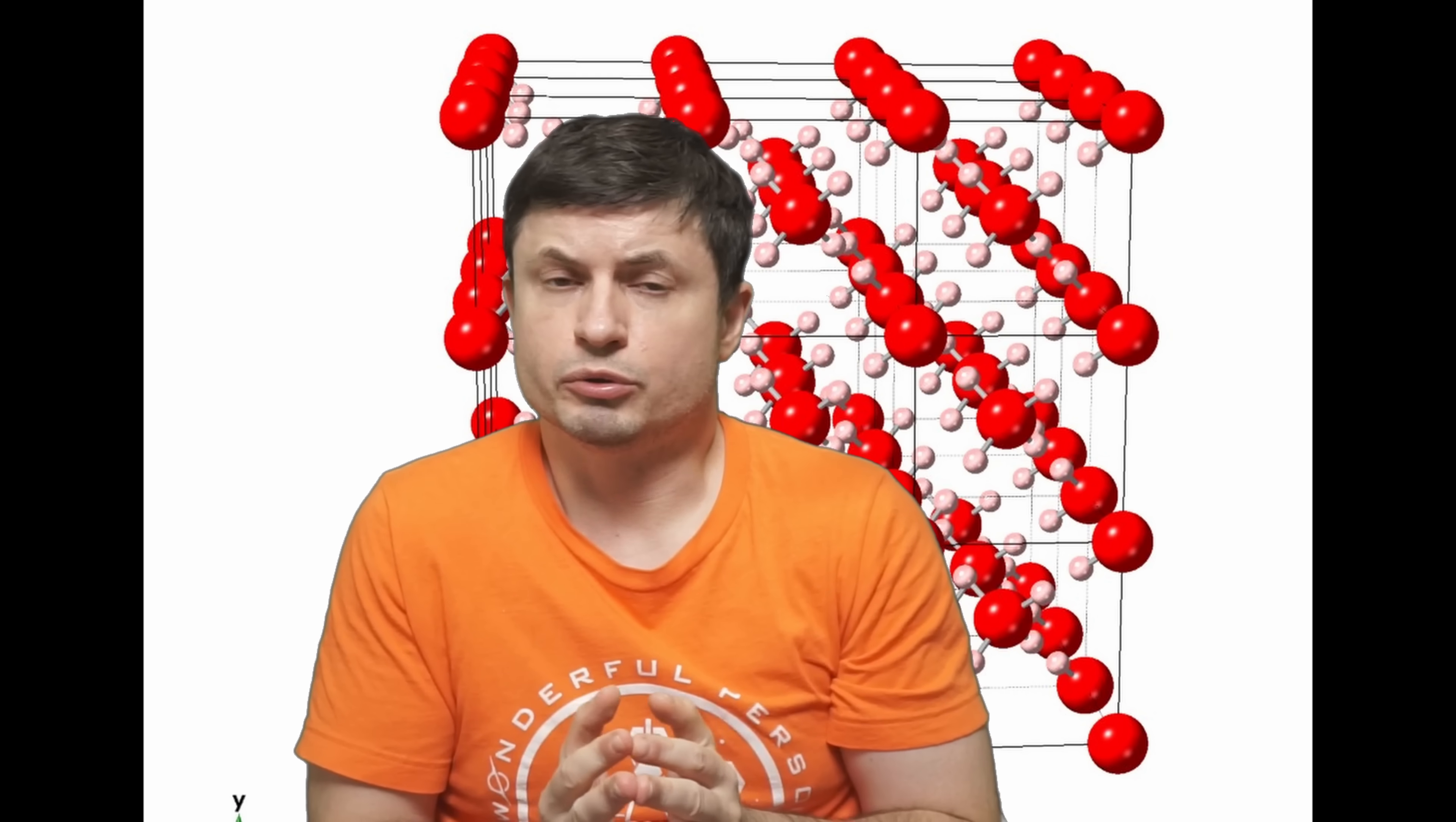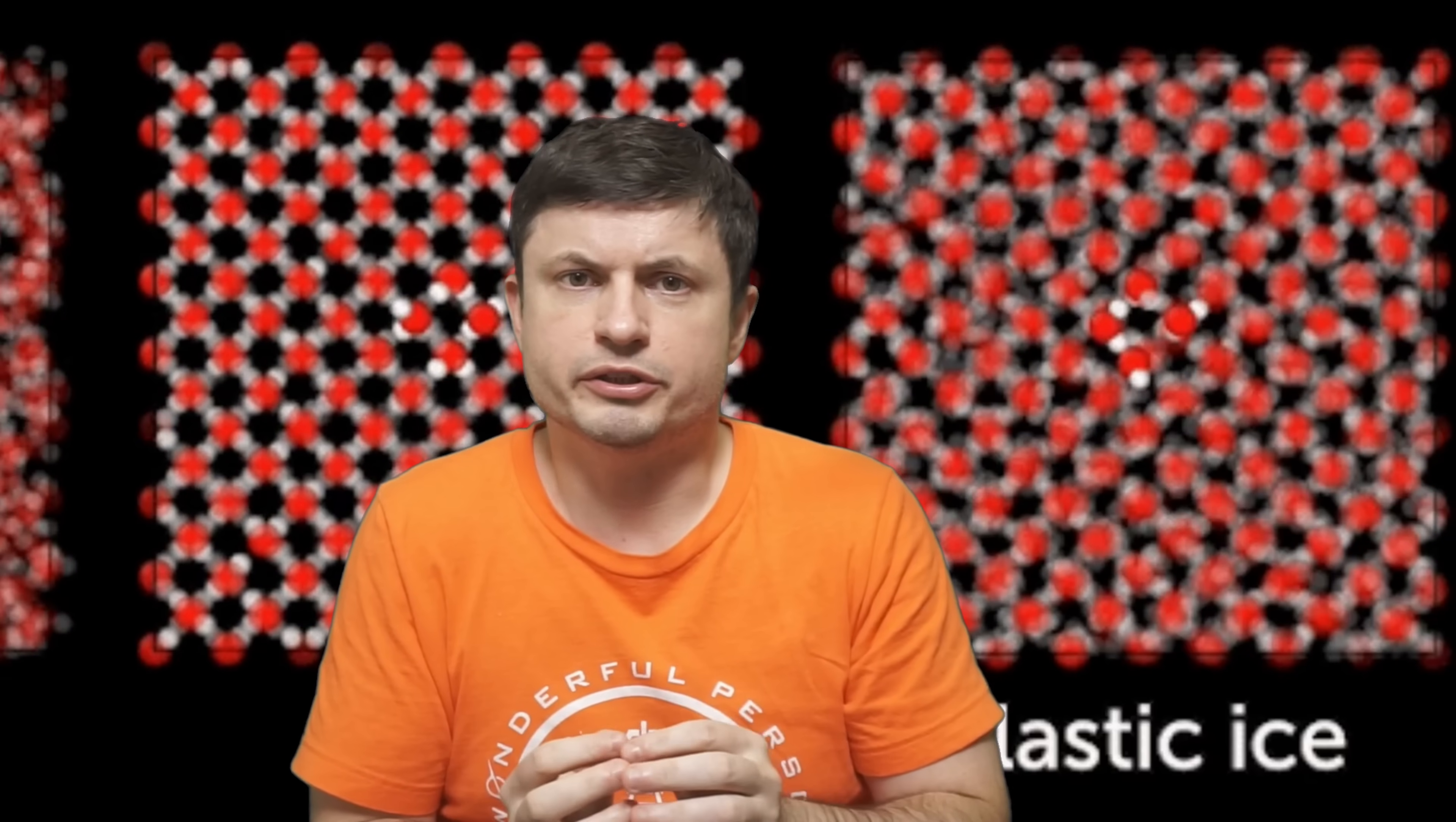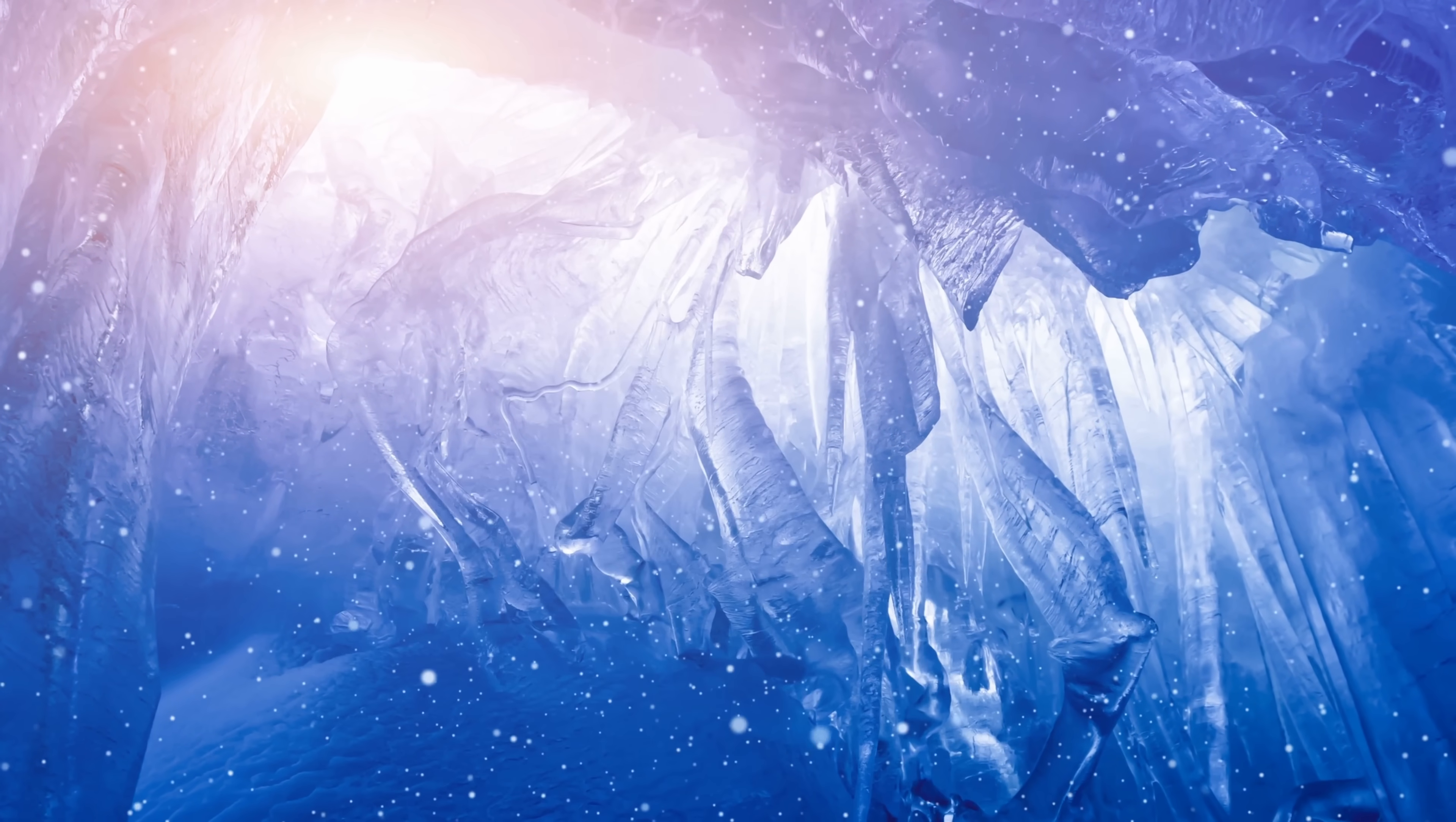But for many years, scientists also speculated that in certain conditions and in certain pressures, this ice can also transform into something slightly different. They believe that it can also become plastic. Specifically, once the temperatures go up just a little bit, with pressures going up to about 6 gigapascal, this cubic structure can then become a little bit more mobile and can actually create something resembling clay. An unusual intermediate state between liquid and crystal.